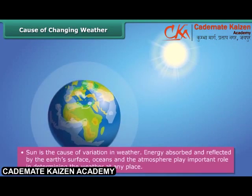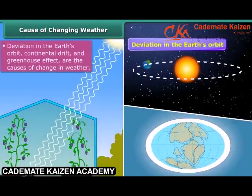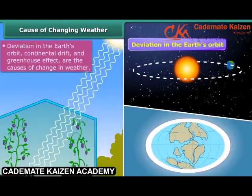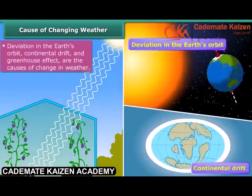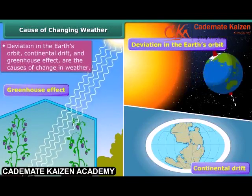The sun causes all changes in the weather. Energy absorbed and reflected by the earth's surface, oceans, and the atmosphere play important roles in determining the weather at any place. Also, deviation in the earth's orbit, continental drift, and the greenhouse effect are additional causes of changes in weather.